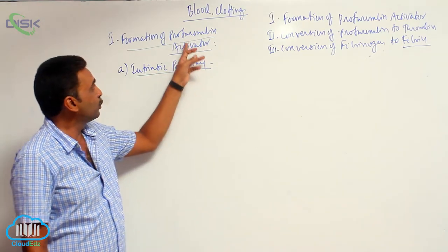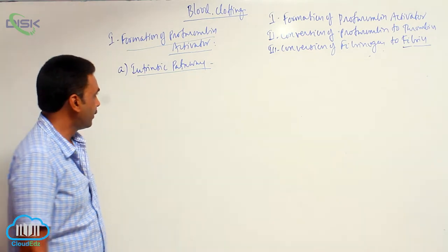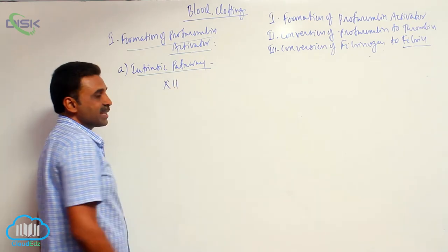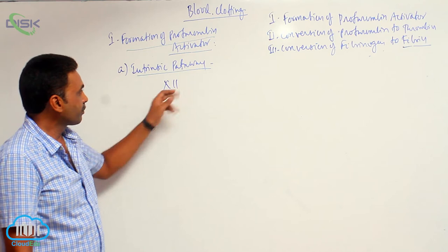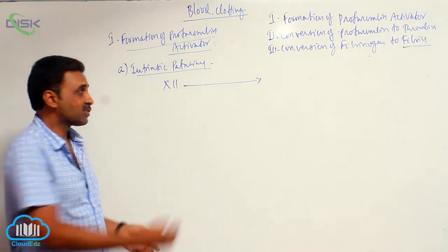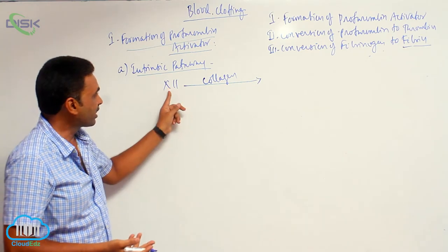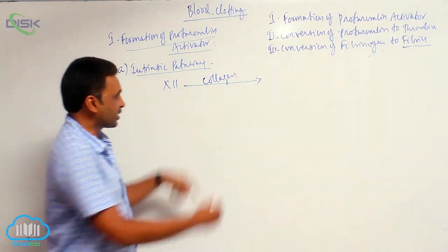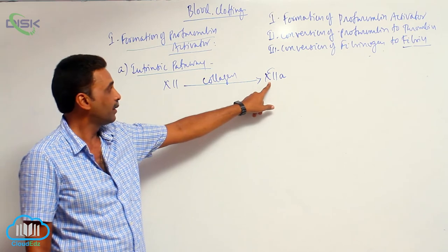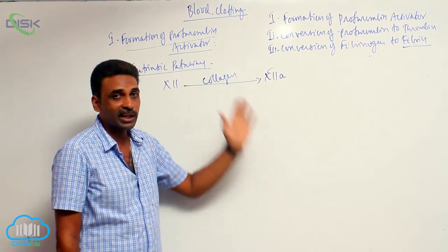In the intrinsic pathway, prothrombin activator is formed by substances present in the blood, and it is initiated by blood platelets. The first step is activation of factor number 12. Factor number 12 is initially in an inactive state, so whenever factor number 12 comes in contact with the collagenous fibers — collagen present in the tunica externa of blood vessels — it is activated. This activated factor number 12 is nothing but Hageman's factor.